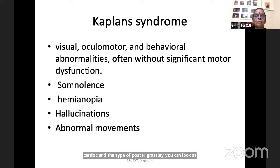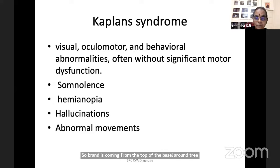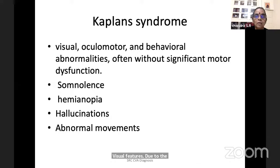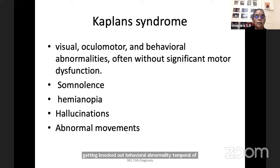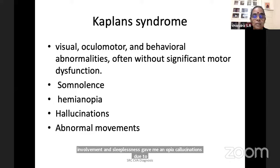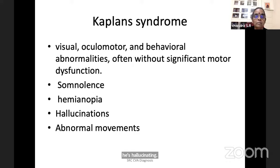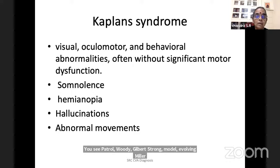Kaplan syndrome is top-of-the-basilar artery stroke. Branches coming from the top of the basilar artery get involved. Very difficult to diagnose — you may think it is Miller-Fisher syndrome or long tract top-of-the-basilar syndrome. Patient has visual features due to posterior cerebral artery, oculomotor palsies due to oculomotor cranial nerve nuclei being knocked out, behavioral abnormality due to limbic lobe involvement, sleepiness, hemianopia, hallucinations due to cerebral peduncle involvement, and abnormal movements — but long tract signs are not there. So you may be confused between Horner-Jalhar syndrome, Miller-Fisher, while the patient progresses into maximal basilar artery stroke and dies. That is called top-of-the-basilar syndrome or Kaplan syndrome.